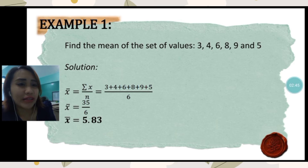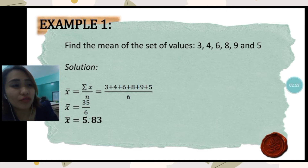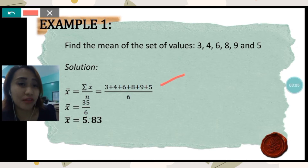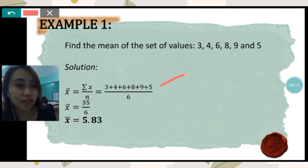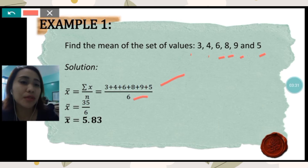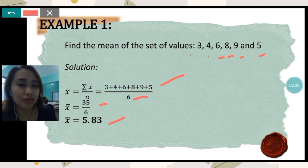Example number one: find the mean of the set of values 3, 4, 6, 8, 9, and 5. Using the formula x-bar equals the summation of all x over n, we simply add all the given data: 3 plus 4 plus 6 plus 8 plus 9 plus 5, and divide by how many numbers there are in the data set. There are 6 numbers, so we get 35 over 6, and dividing 35 by 6, we get 5.83.